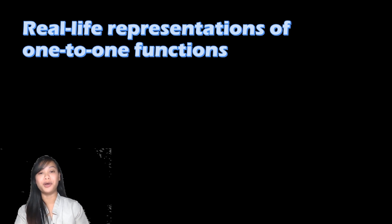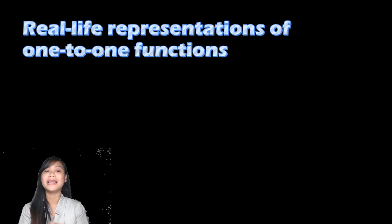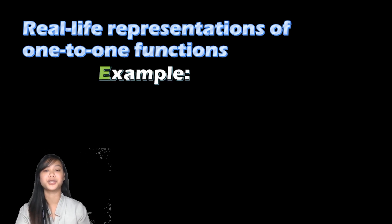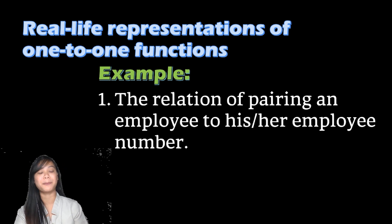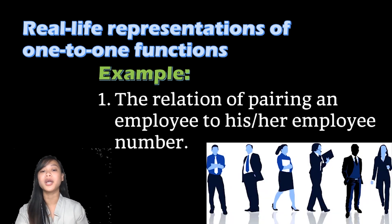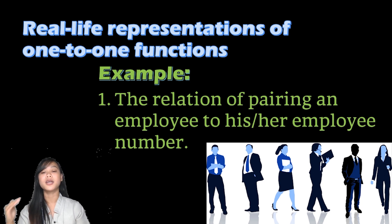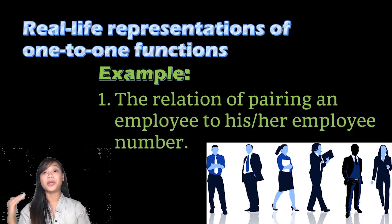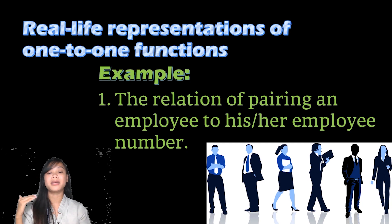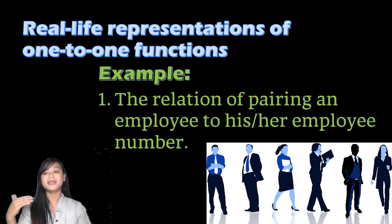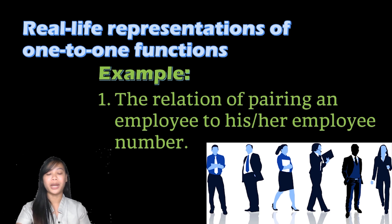Now let us move on to the different real-life representations of one-to-one functions. The first example is the relation of pairing an employee to his or her employee number. Each employee in a company has their own unique employee number based on the time they were hired.